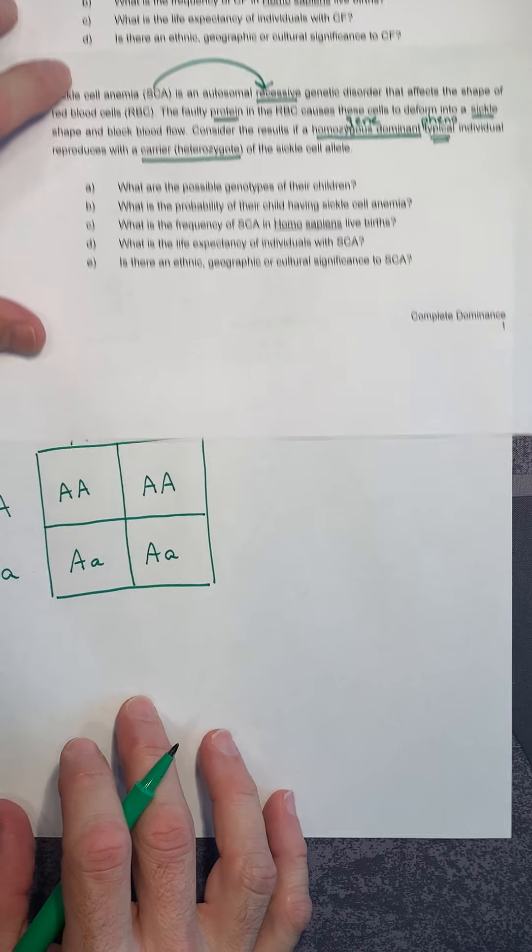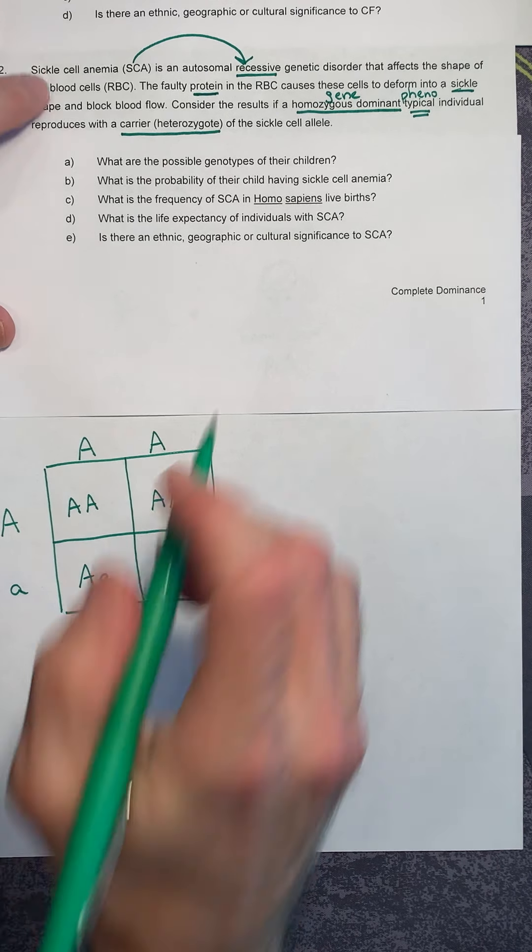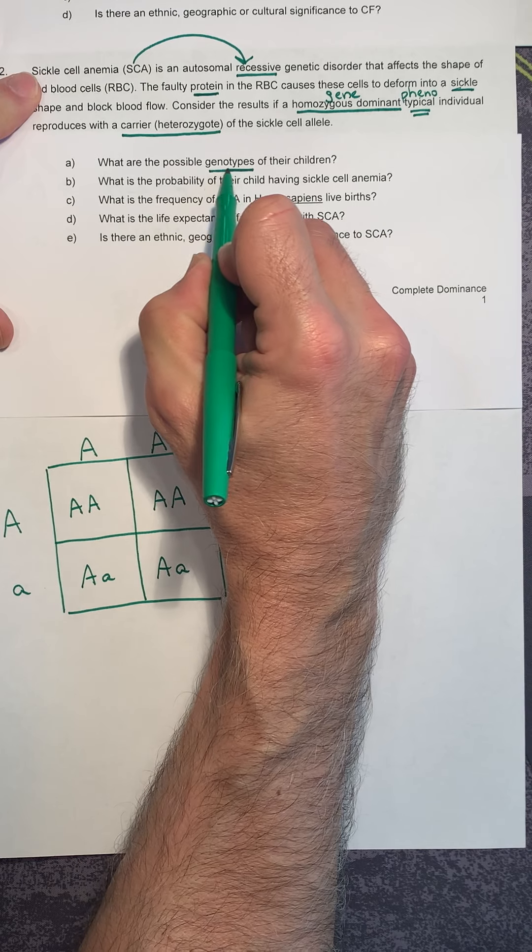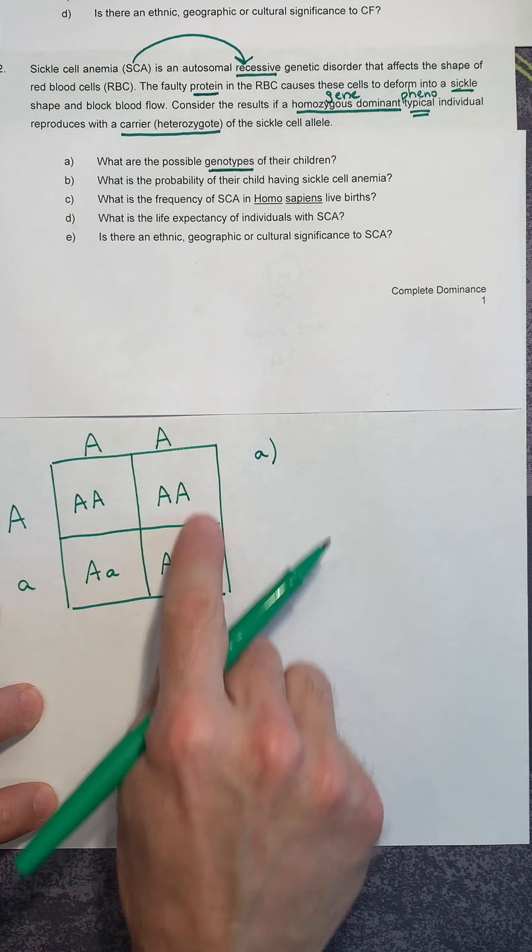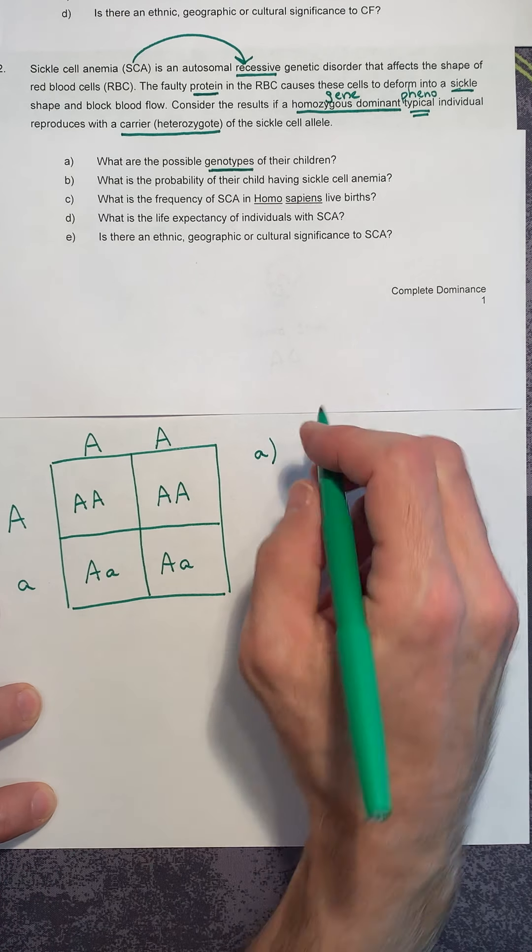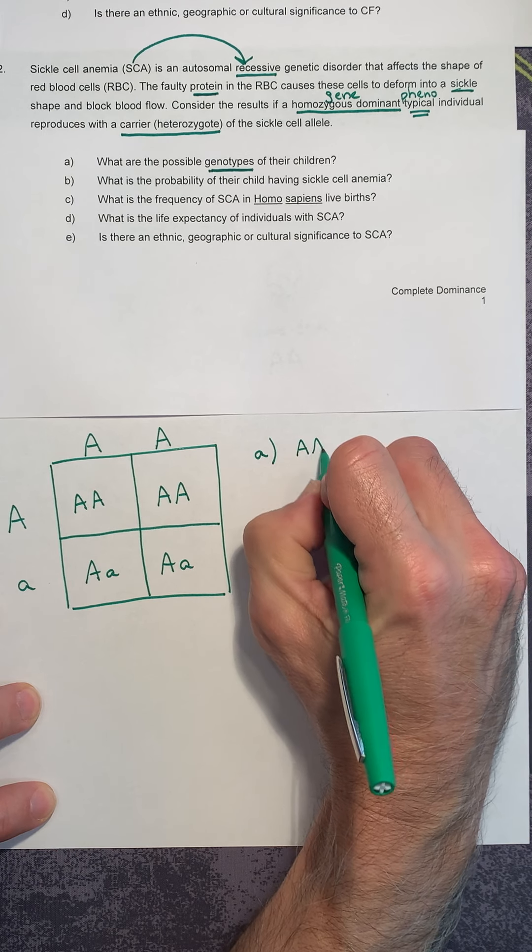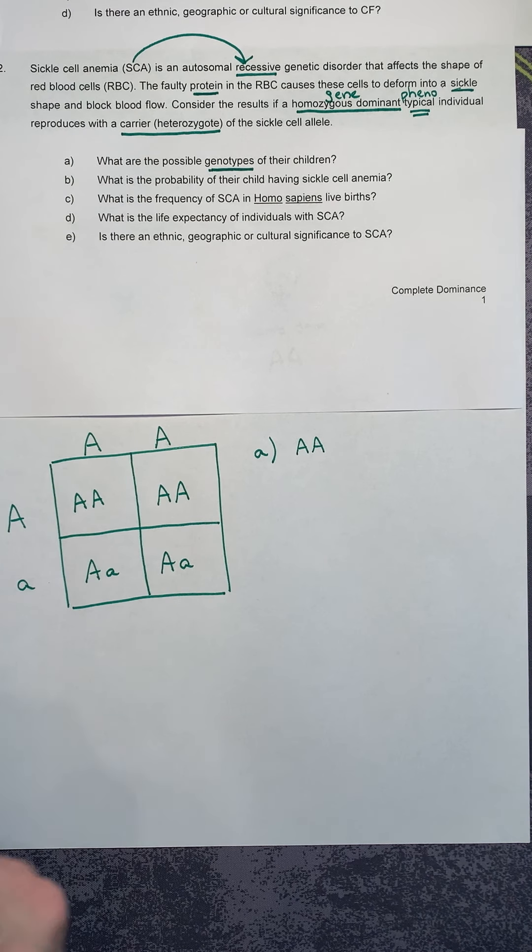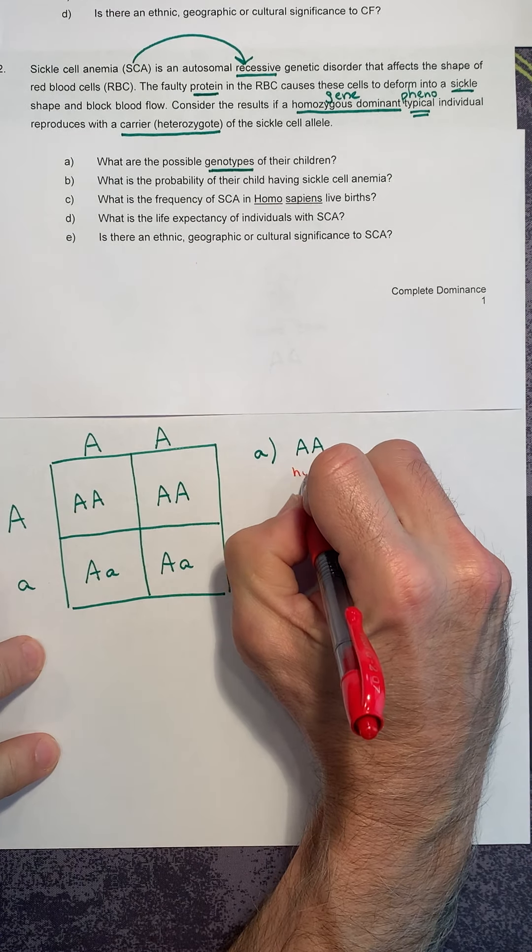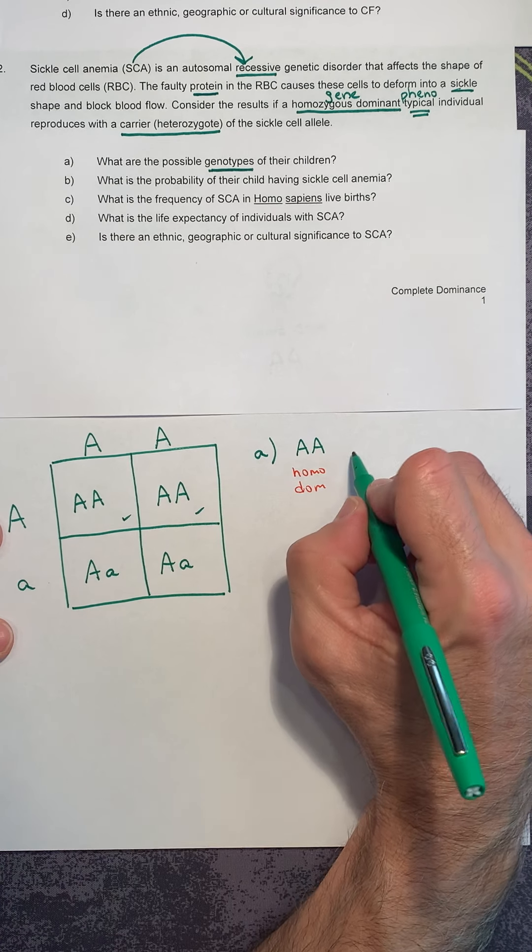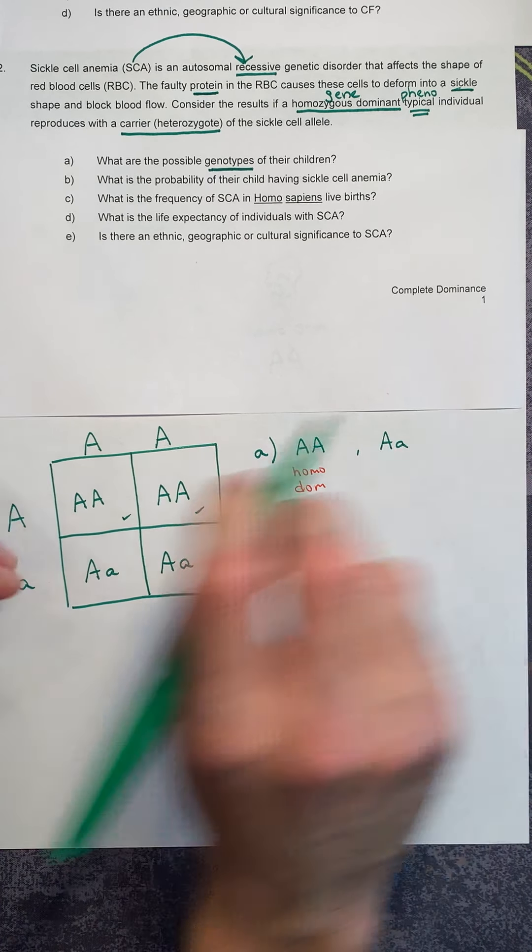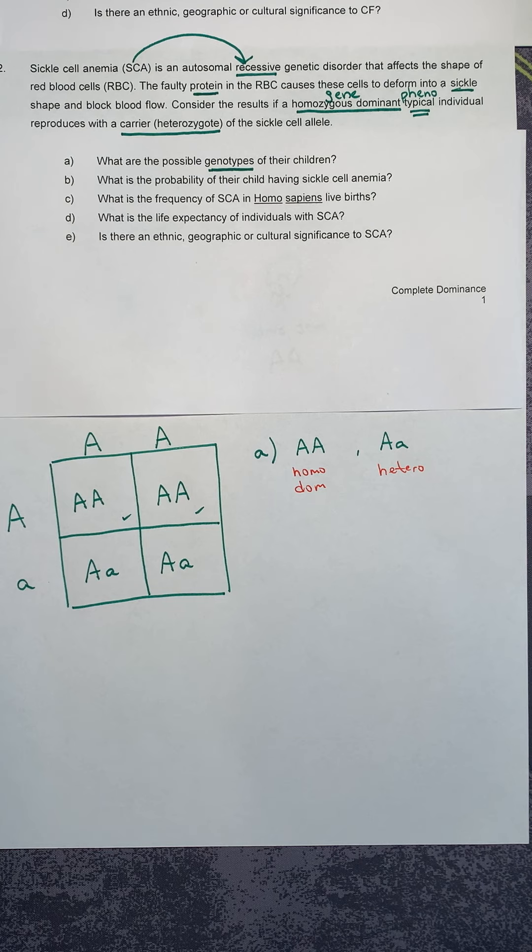So on part A, it says, what are the possible genotypes of their children? What are their children genetically? So let's take a look inside of the Punnett square. What could they have? They could have a big A, big A, which would be a homozygous dominant individual. This is homozygous dominant. So that takes care of these two. Or they could have an individual who's big A, little a. That is a different pair. So they could have a heterozygote. So those are the two choices.